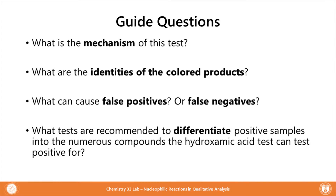Here are some guide questions. What is the mechanism of this test? What is the identity of the colored products we've formed? What can cause false positives or false negatives? Because this test is quite broad, what tests are recommended to differentiate positive samples into the numerous compounds the hydroxamic acid test can test positive for?